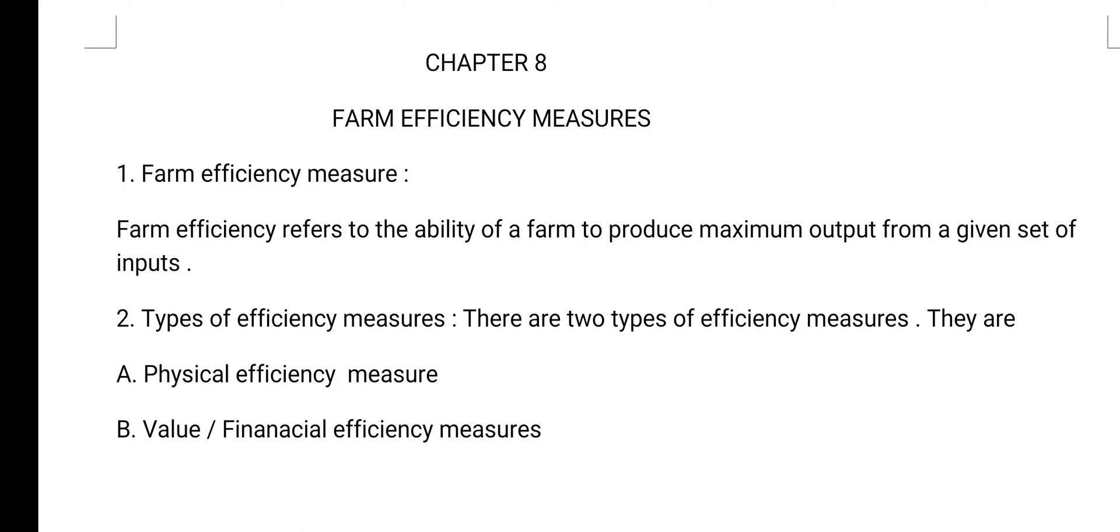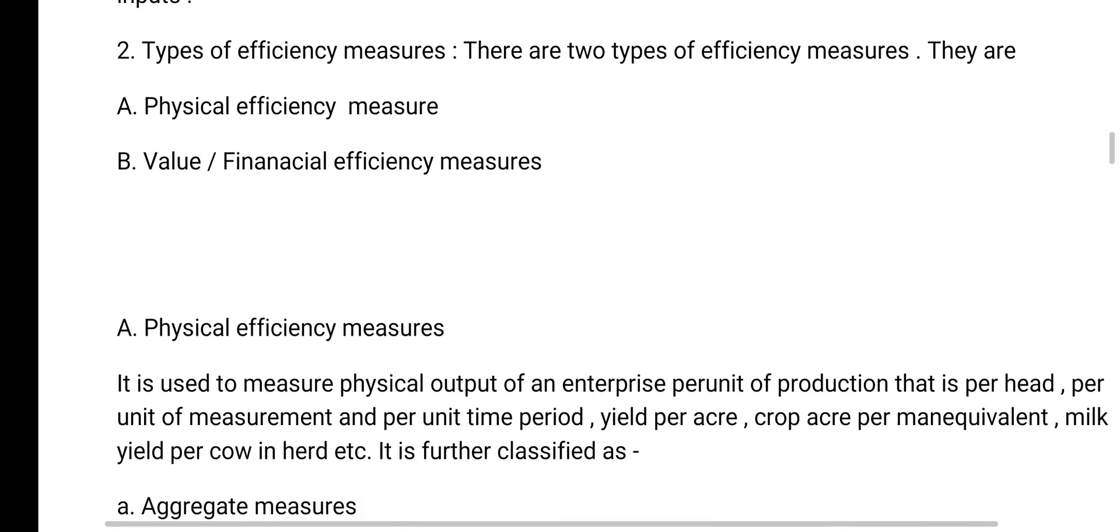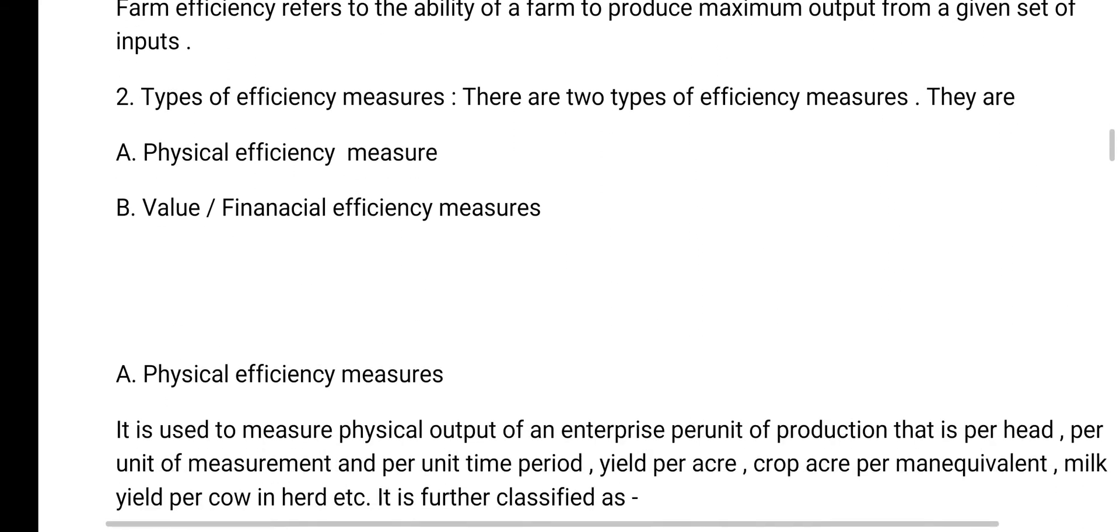Our second topic is types of efficiency measures. There are two types of efficiency measures. They are first, physical efficiency measure and second is value financial efficiency measures. These definitions are very easy and it learns quickly. It is very important for exam point of view.